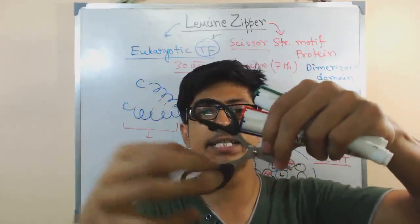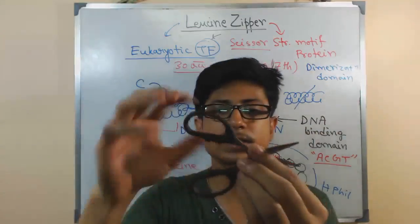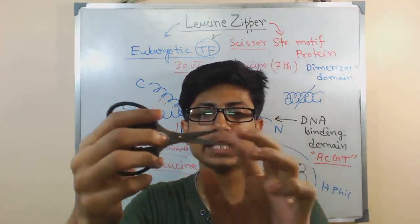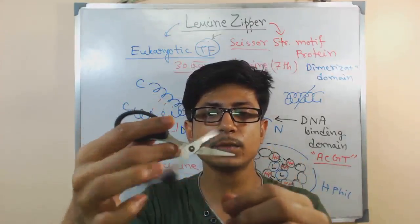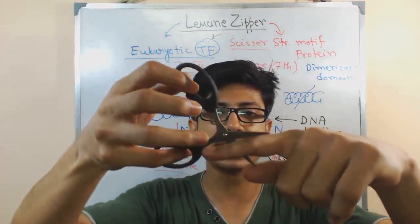If this is the leucine zipper, this black side is made up with more leucines. It is made such that the N-terminal domain will interact with the major groove of the DNA. Now it is interacting.